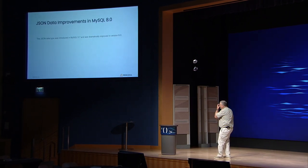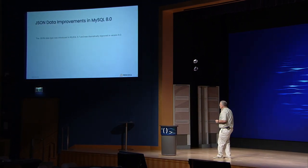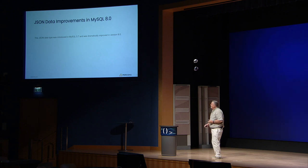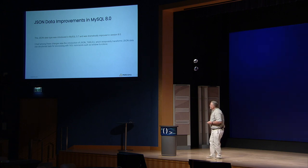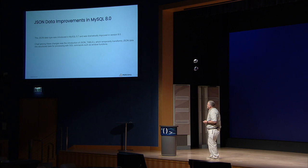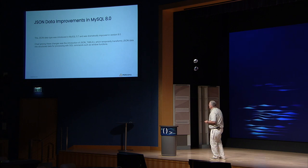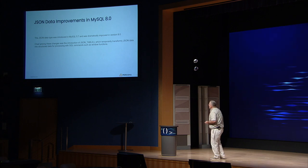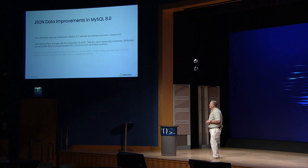The JSON data type was introduced in 5.7, and they did a lot of work to get it improved for 8.0. Chief among these changes was the introduction of JSON table, which you'll see later, and some of the stuff for JSON validation.